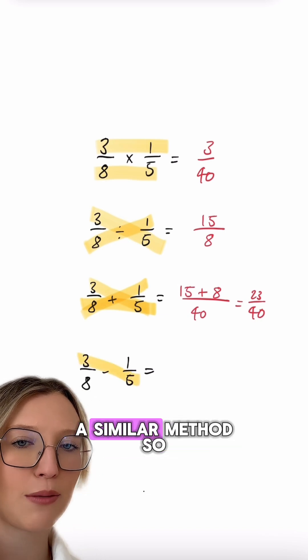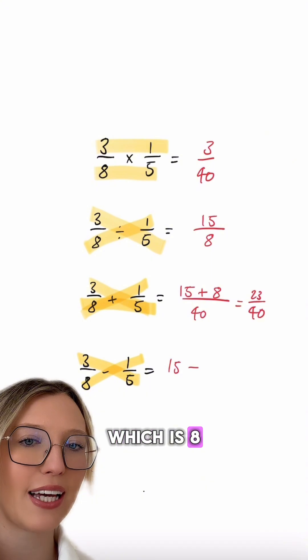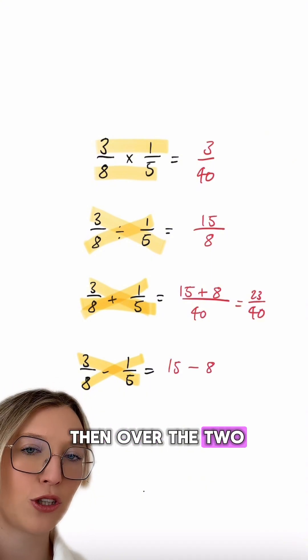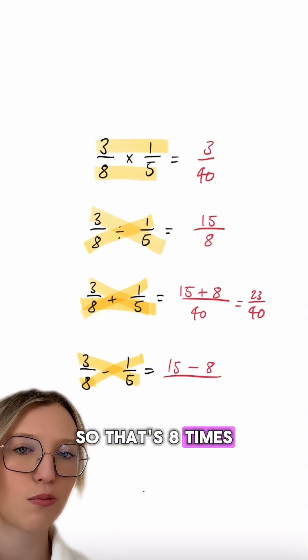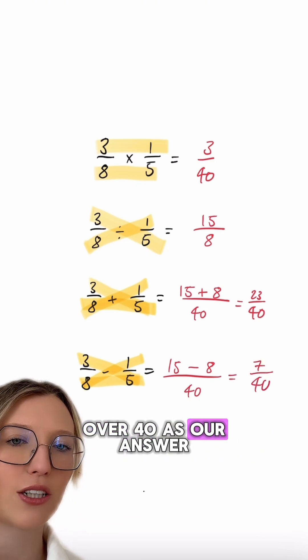To subtract, we're following a similar method. So 3 times by 5 is 15. We're then subtracting 8 times by 1, which is 8. And we've got that over the two denominators multiplied. So that's 8 times by 5, which is 40. 15 minus 8 on the top leaves us with 7 over 40 as our answer.